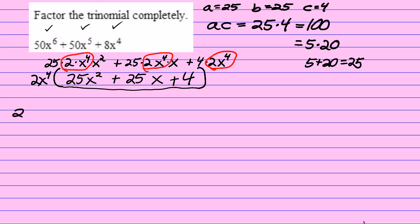I'll have 2x to the fourth, bracket, 25x squared plus 5x plus 20x plus 4.